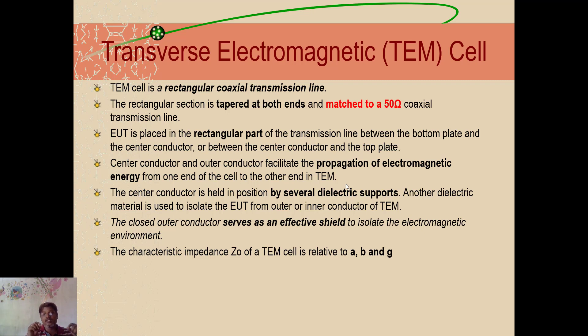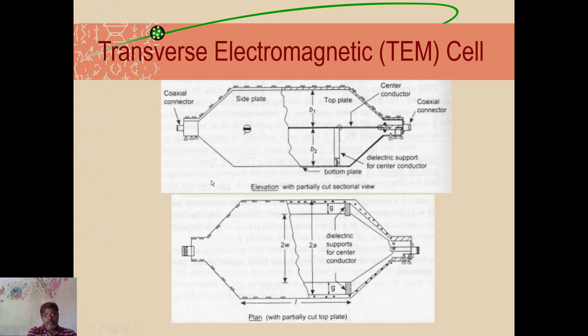The characteristics impedance, the Z naught of a TEM cell depends on the length, width and g. What is the a and b? a is the length, here this is the a, length, and in elevation view, sectional elevation view with partial cut sectional view when you see, this is your a and this is your b. Otherwise, if you go with a plane, this is your a and this is your b. This is your b, or you can call it as l. And the center part, this center part, we call it as 2w. And the remaining the wall is where you place your, this is all your dielectric supports for center conductors, center conductor. At that height, we call it as g. So based on this a, b, g, your catalystics impedance of your TEM cell going to be.